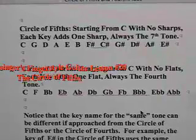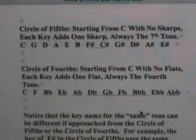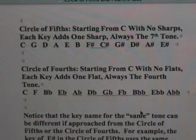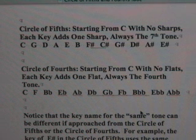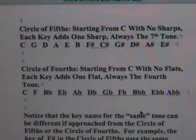Here we have a little write-up of it. What we're saying here is that if you started from C and you go to the fifth note, you'll get G, and you add one sharp — that's the F sharp in this case. And you're playing in the key of G, but the next key is D, and D you'll have to add another sharp. You've already done the F sharp, now you add the C sharp.